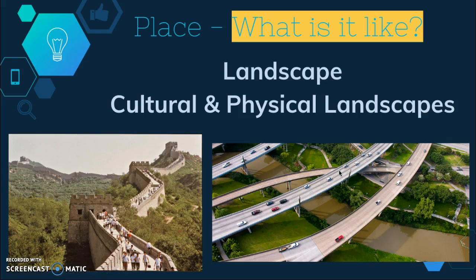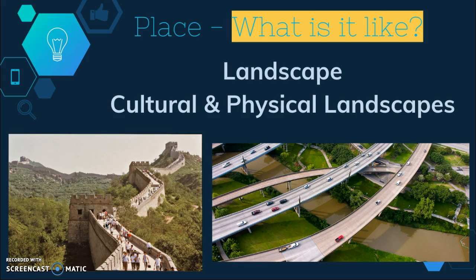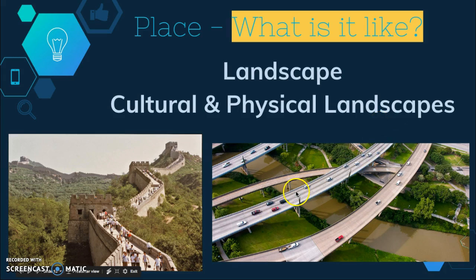Let's talk about the difference between cultural and physical landscapes. The landscape is basically the attributes of a place — the overall appearance of an area. Landscape can be cultural, also known as the built landscape, which shows evidence of human activity and is an example of human-environment interaction. For example, the Great Wall of China is a cultural landscape — people built it to keep someone out or keep people from leaving. The physical landscape is the natural environment around that built landscape — in the same image we can see it's a mountainous region. Another example of cultural landscape is highway systems, while in the same picture the physical landscape is shown by a river running through the area.